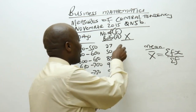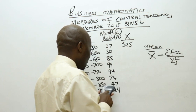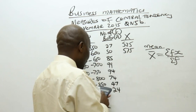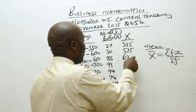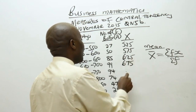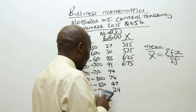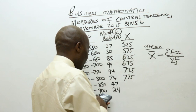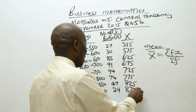So we have 525. Then 550 plus 600 divided by 2, giving me 575. Then 600 plus 650 divided by 2, giving me 625. This has to be 675. Then 675 plus 50 giving me 725, plus 775. The next one will be 825, and lastly 875.